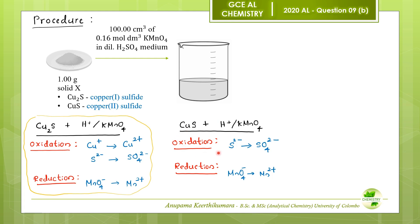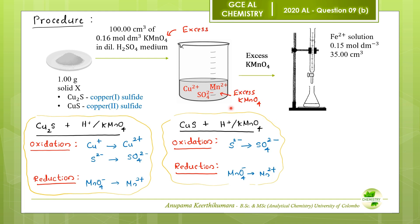In the reaction between copper(II) sulfide and potassium permanganate, sulfide ions oxidize to sulfate ions and permanganate ions reduce to Mn²⁺ ions, giving a solution containing Mn²⁺, Cu²⁺, and sulfate ions. KMnO₄ is added in excess. This excess potassium permanganate was then titrated with 0.15 mol/dm³ Fe²⁺ solution, and the volume required for the endpoint was 35 cm³.